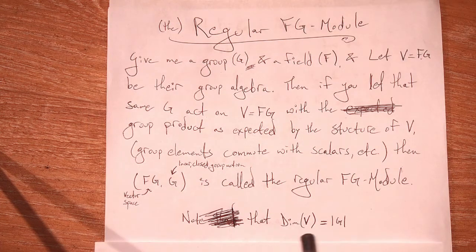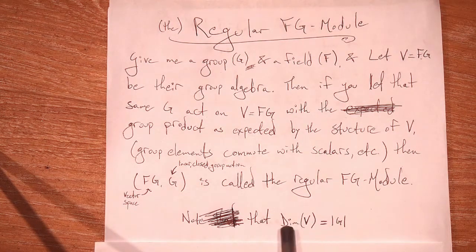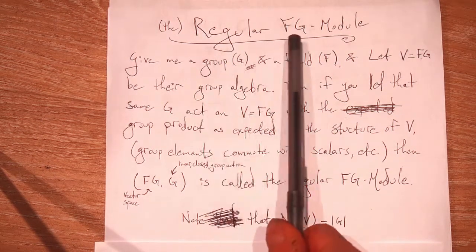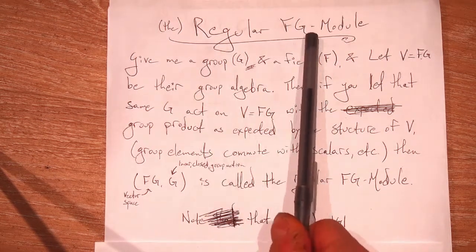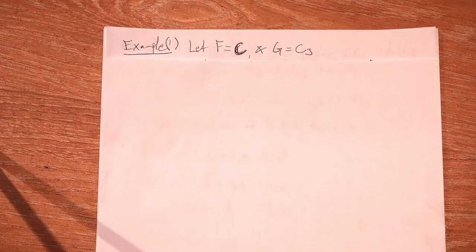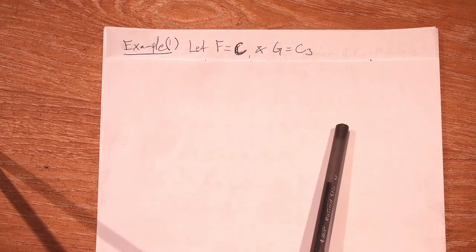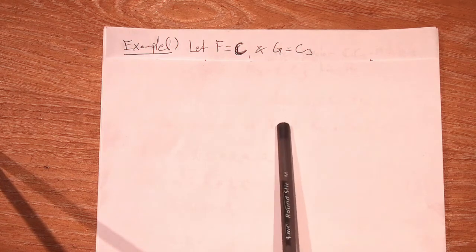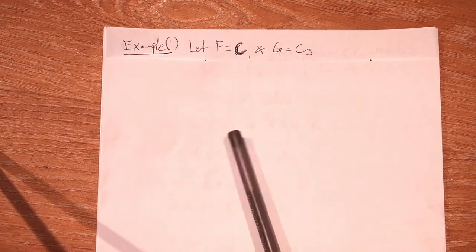Note that the dimension of our vector space is the order of the group. So the dimension of the vector space can get big fast, and that is really the main issue of working with the regular representation of a group over some field F. So that's pretty cool. You give me a group, I can use that group to make a vector space and a group action on that vector space. So I can use a group to generate its own FG module.